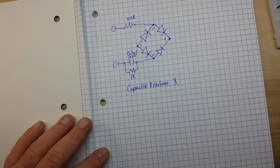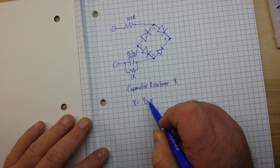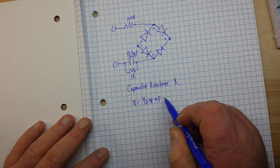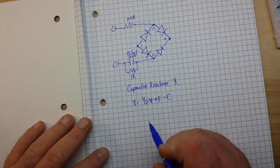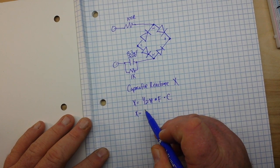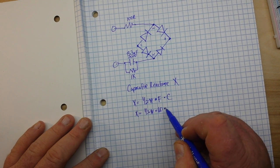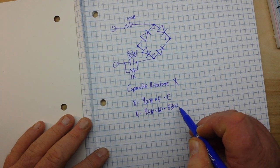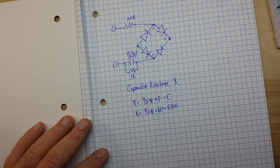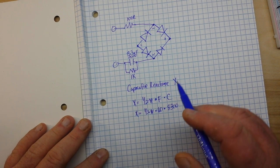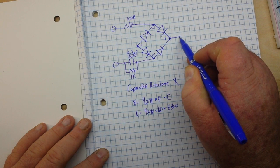...and the formula to find capacitive reactance is 1 over 2π times the frequency times the capacitance. So Xc equals 1 over 2π times 60 hertz times 8300 nanofarad - you can do the rest of the math yourself if you want. Now coming out of the positive end here for stability...